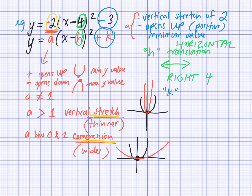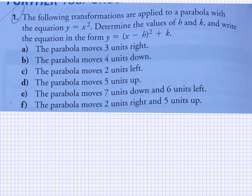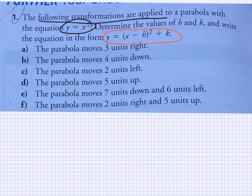The K value tells you the vertical translation — it tells us if it goes up or down. In this case, this would shift three units down. In these examples, the following transformations are applied to a parabola with the equation Y equals X squared — that's the parent function. We have to determine the values of H and K and write it in vertex form: Y equals X minus H squared plus K.